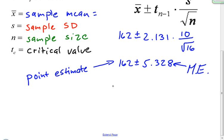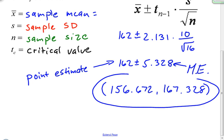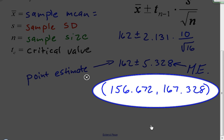When I do this calculation, I end up getting an interval of 156.672 up to 167.328. And this right here is my confidence interval. From 156.6 to 167.3, there is the interval.